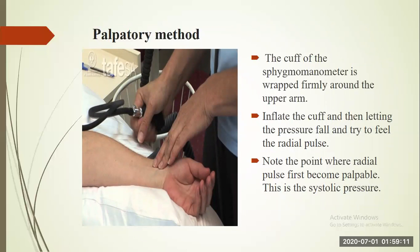In the auscultatory method, both systolic and diastolic blood pressure can be measured, and it requires a stethoscope. In the palpatory method, no stethoscope is required — blood pressure is measured manually. The cuff of the sphygmomanometer is wrapped firmly around the upper arm, then inflated. As pressure is released, the point where the radial pulse first becomes palpable is noted as the systolic blood pressure.